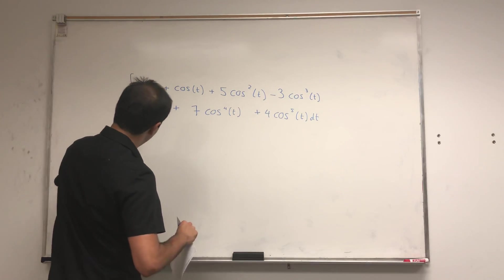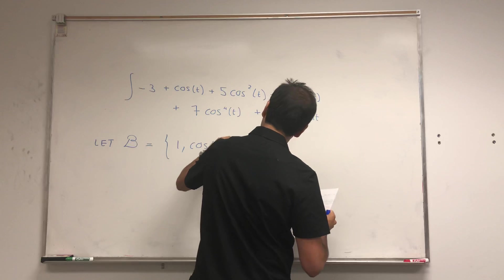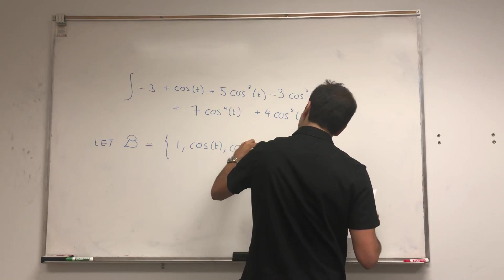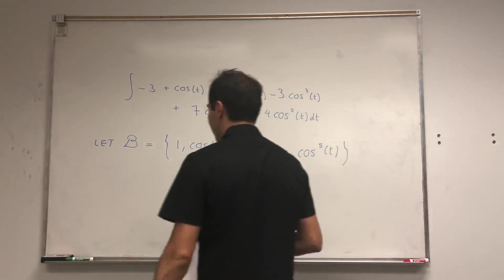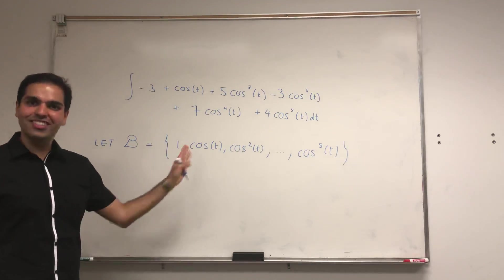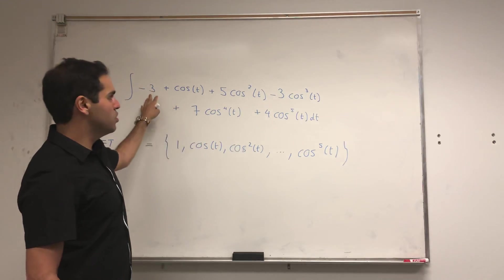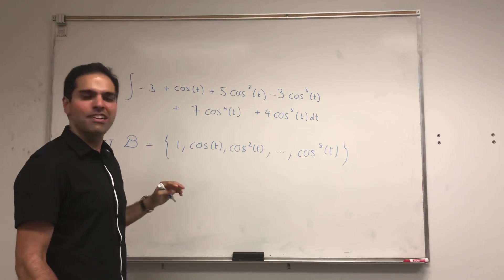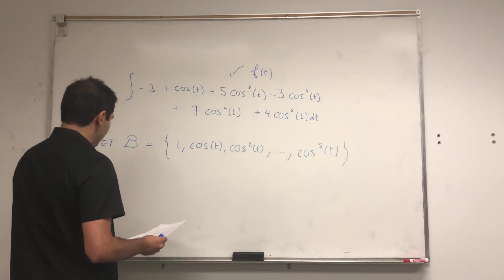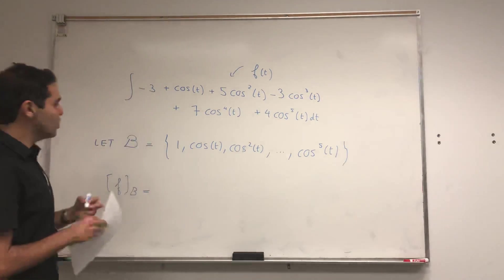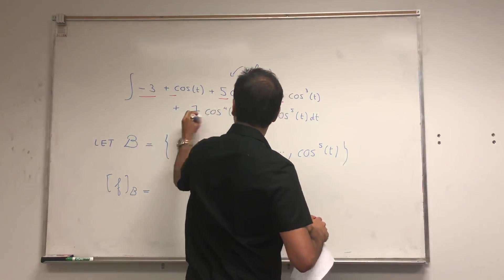Let B be the basis: 1, cosine t, cosine squared of t, all the way up to cosine to the fifth of t — a basis for the span of those functions. It turns out those functions are linearly independent, so we're good. And why is that nice? Because with respect to that basis, f has very nice coordinates. If f of t is our function, then the coordinates of f with respect to B are just its coefficients: 3, 1, 5, minus 3, 7, 4.